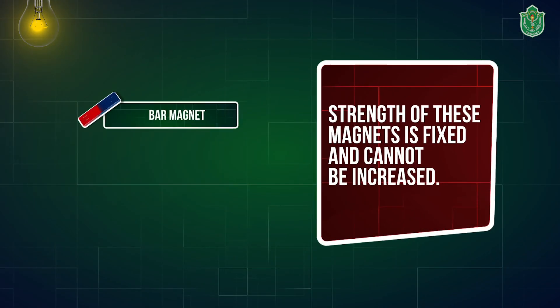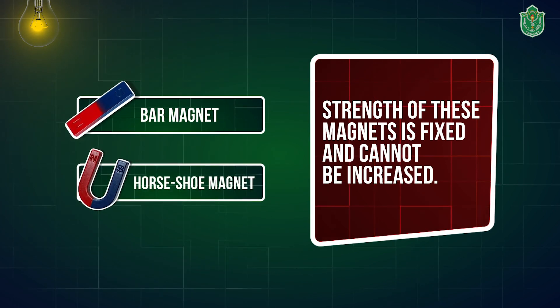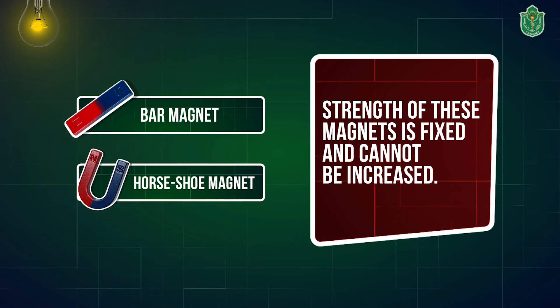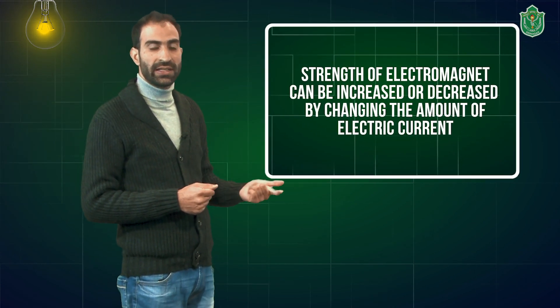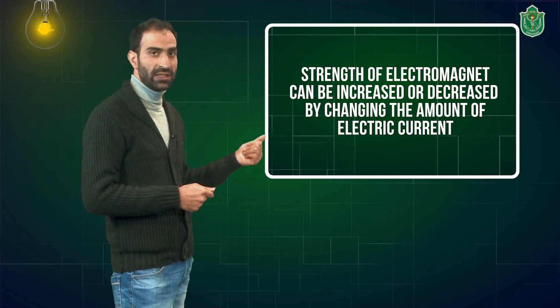So far we have seen magnets as a bar magnet or a horseshoe magnet whose strength is permanent — it can neither be increased nor decreased. But the case is different with electromagnets. Their strength can be increased or decreased by changing the amount of electric current passing through the wires. We can also change the strength of an electromagnet by increasing or decreasing the number of turns of electric wire wrapped around the magnetic material.